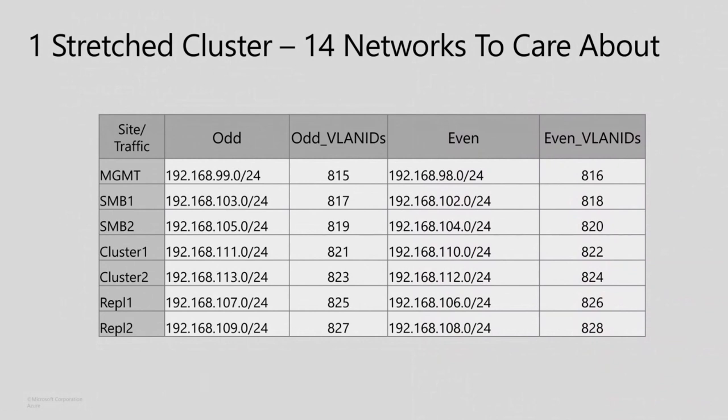It's just a summary of what we've been talking about. You see that for one stretch cluster you have about 14 subnets to care about with routing — that describes the complexity of a stretch cluster's networking. It's no fun to go to the network team and ask for 14 subnets with routing, so prepare that in advance. Also consider the VLANs — we're using different VLANs throughout, using the net numbers from our test lab.